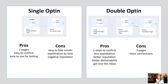A double opt-in means they have to do two things. Number one, fill out the page where they put their email and name — that's the opt-in page. Then once they do that, they'll have to do the second thing, which is go check their email and click confirm.